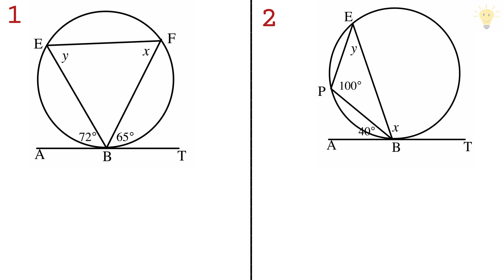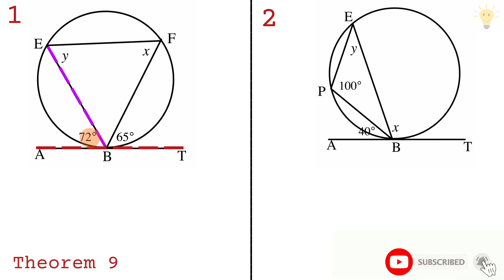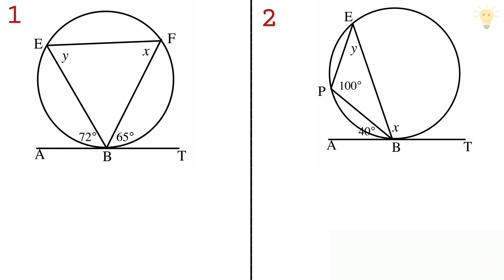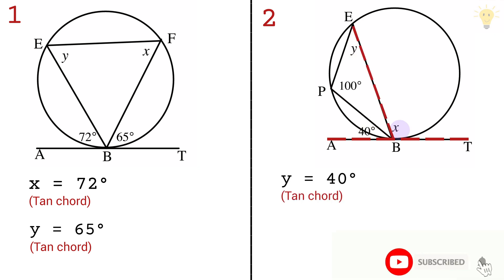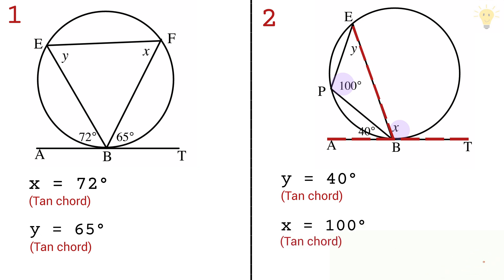Theorem 9 states that the angle between a tangent to a circle and a chord drawn from the point of contact equals the angle in the alternate segment. This means x equals 72 degrees and y equals 65 degrees in the first example. In the second example, the angle between the tangent and chord equals the alternate segment angle, giving x equal to 100 degrees.